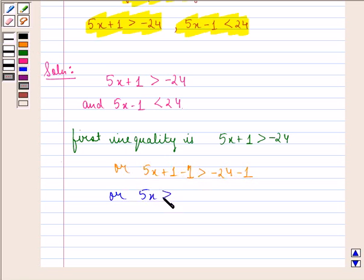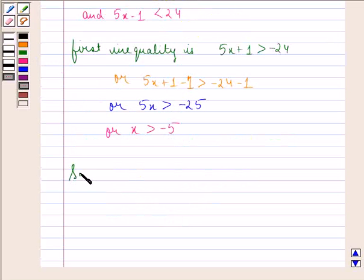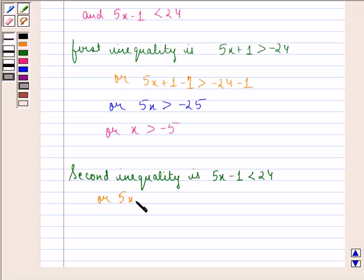Now the second inequality is 5x - 1 is strictly less than 24. We can write this as 5x - 1 + 1 is strictly less than 24 + 1.